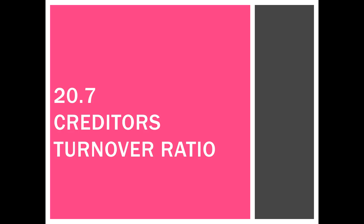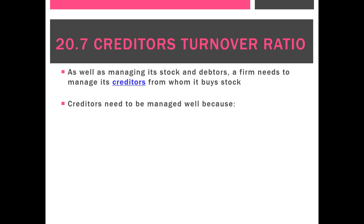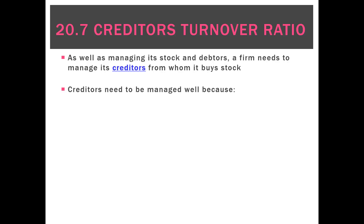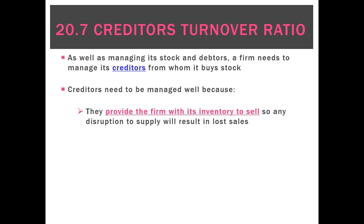The final ratio for chapter 20 is the creditors turnover ratio. We need to remember that creditors need to be managed very well. We want to make sure we're paying them on time and keeping them happy, because they provide us with all our inventory to sell. Any disruption to supply from a creditor because they're unhappy means we're going to lose sales — we simply won't have the stock to sell.